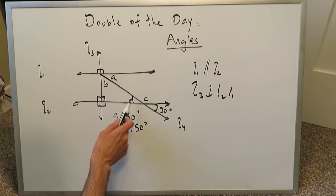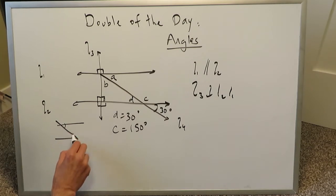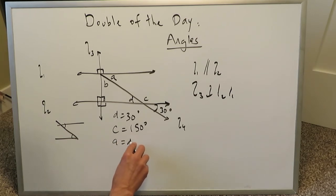You can also use a property of corresponding angles and the Z angle effect. You see this? We have a little bit of a Z angle going on here. When you have two parallel lines and a line which cuts across, these two angles which look like in the form of a Z angle, they're always equal. That means A must be equal to D which must make A equal to 30 degrees.